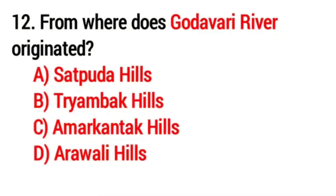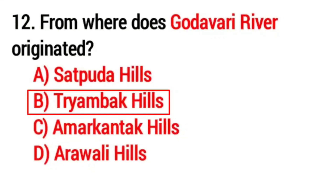Question No. 12. From where does the Godavari river originate? Answer Option B: Trimbak hills.